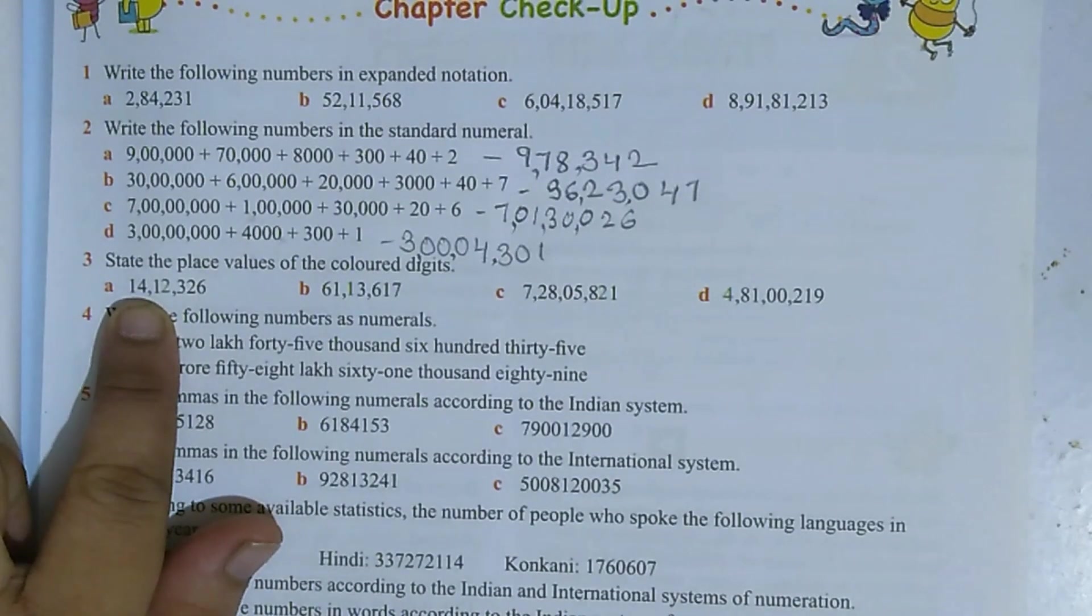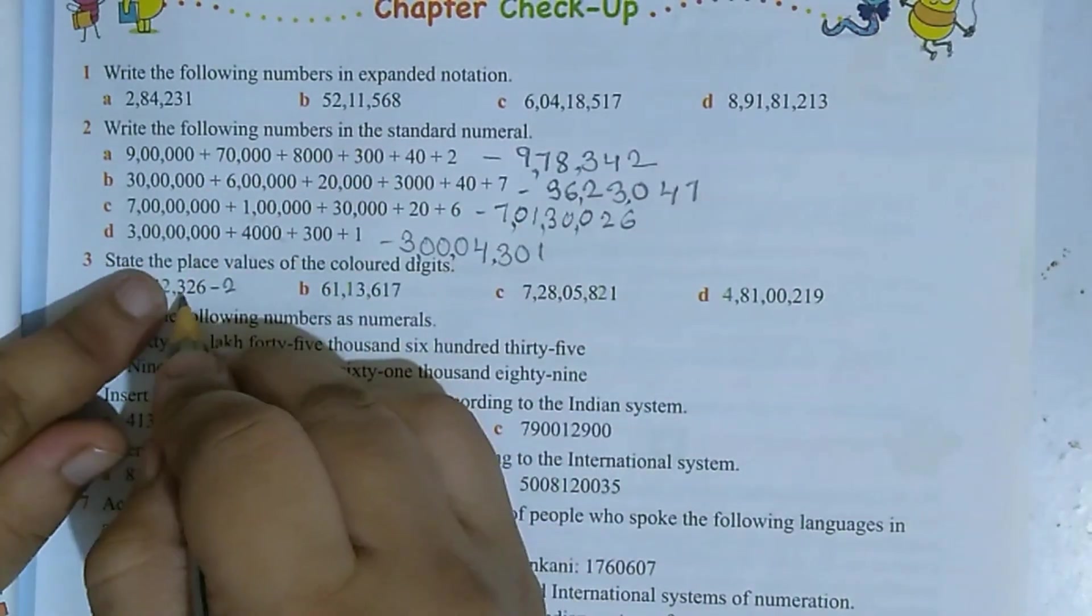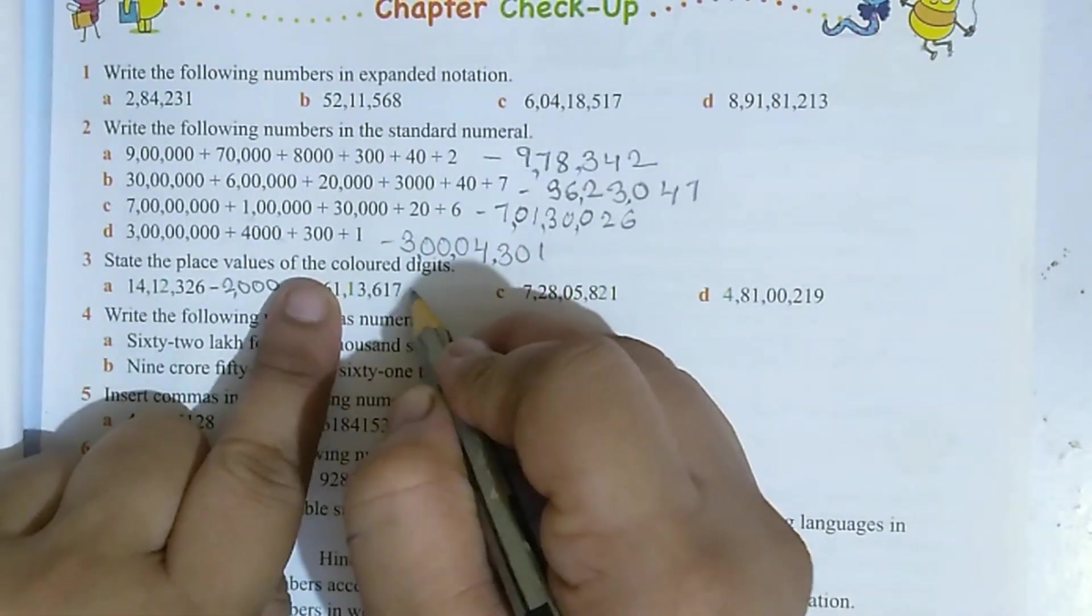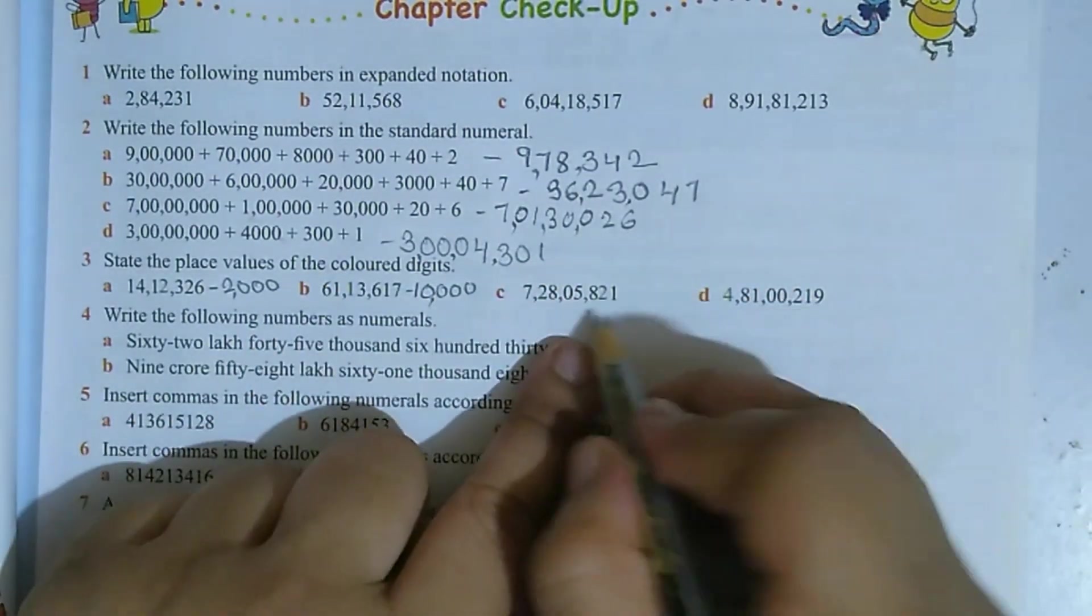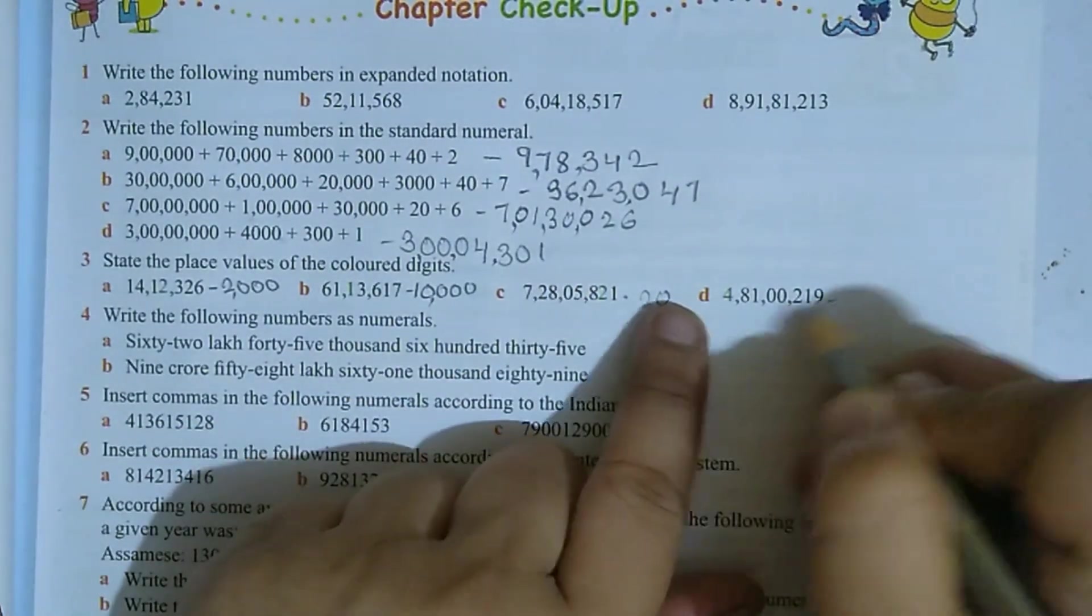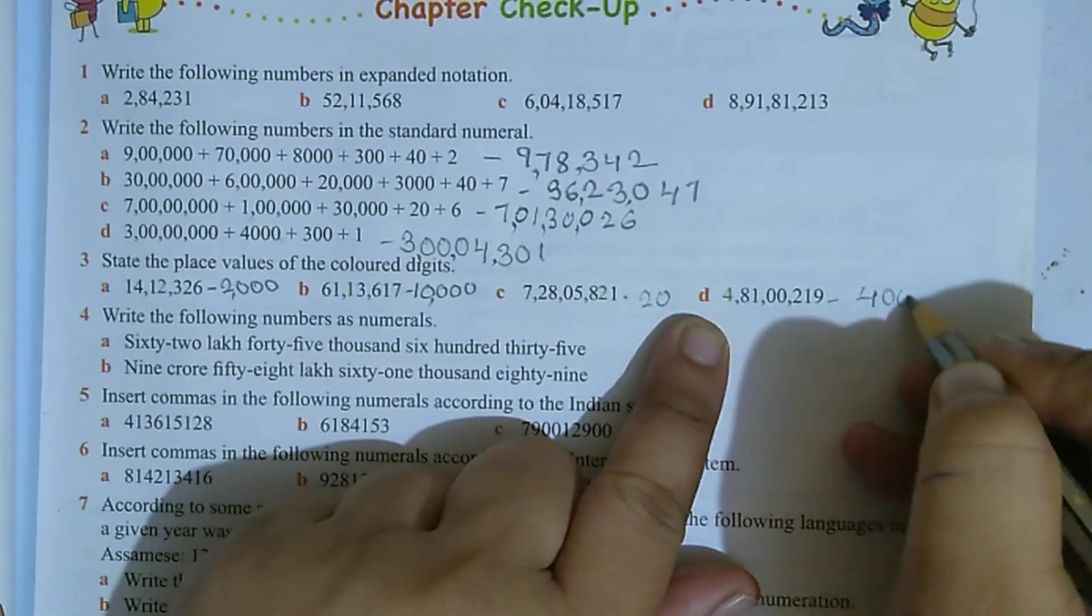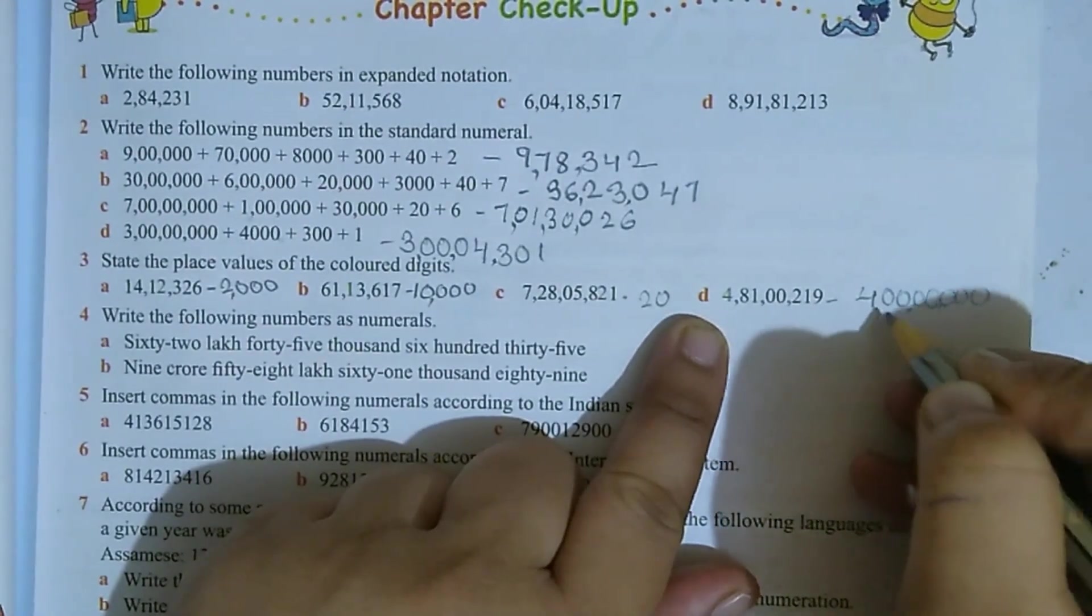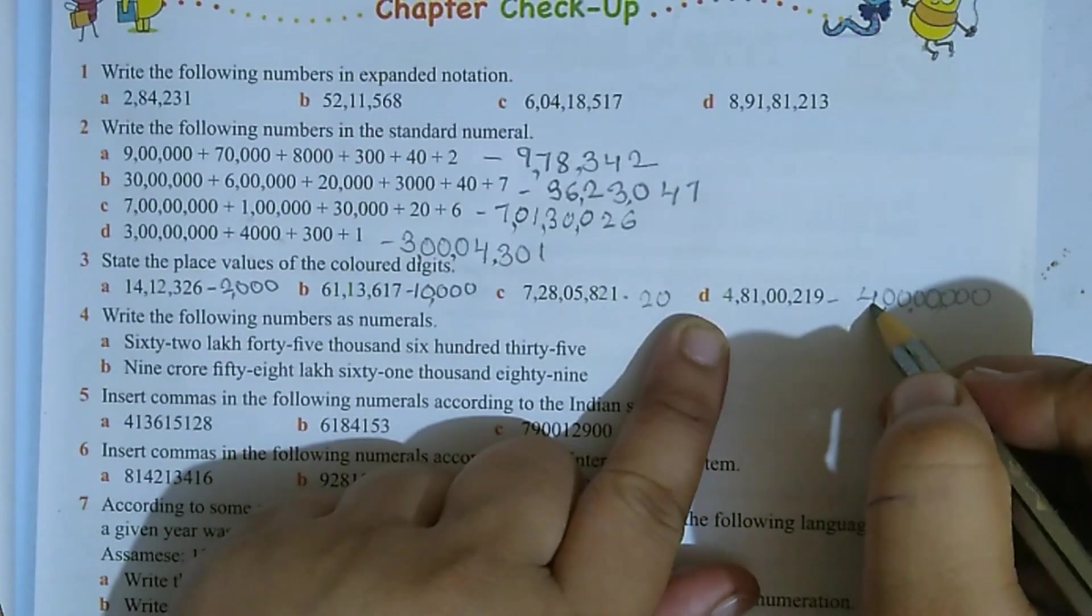Question number 3: State the place values of the colored digit. Here the colored digit is in green color, see 2. So the place value of this 2 will be what? See, after this 2 how many digits are there, put that many zeros: 2000. This 1, after it 4 digits, so put 4 zeros means it is 10,000. This 2, after it only 1 digit, so put 1 zero means it is 20. This 4, after it 1, 2, 3, 4, 5, 6, 7 zeros, so it becomes 4 crore.